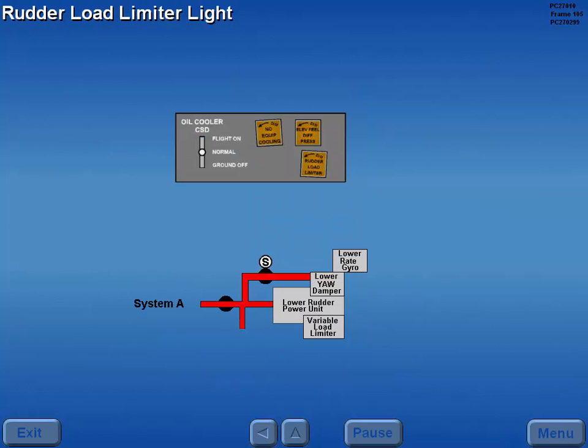The rudder load limiter light illuminates when flaps are retracted and operating pressure to the lower rudder is excessive, or with flaps extended operating pressure is below normal.